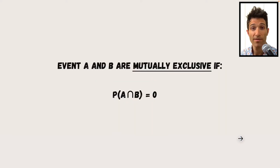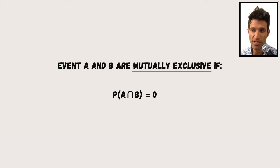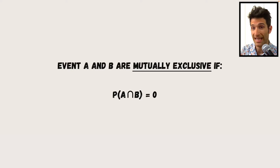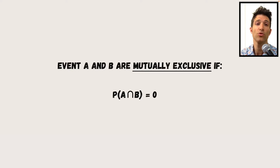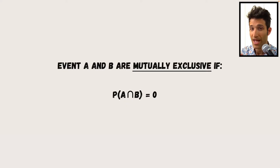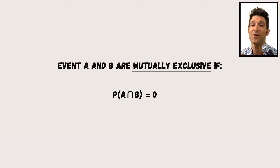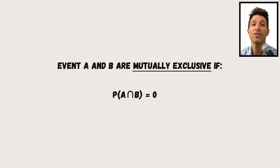And that is the definition of mutually exclusive. It means that a student electing to play cricket excludes the possibility of playing basketball, and vice versa. So they're mutually exclusive.